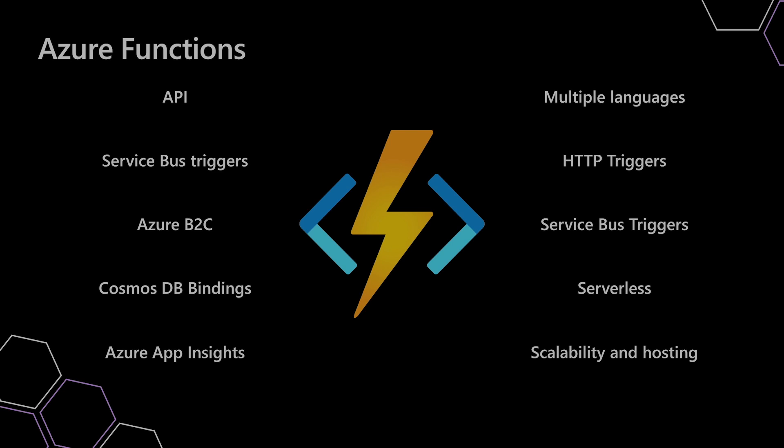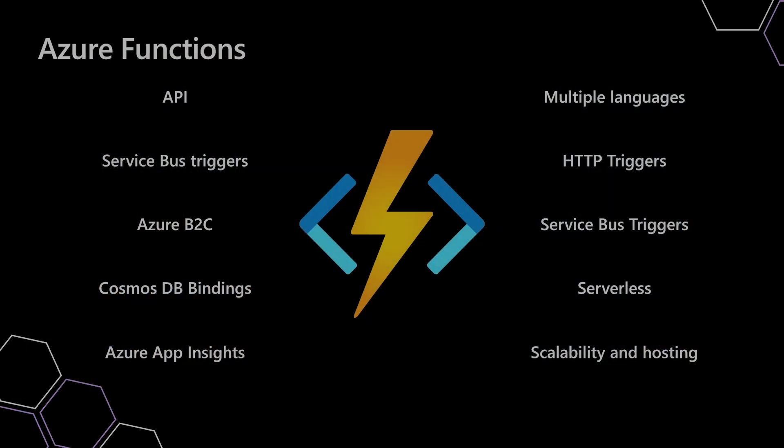But we can have all sorts of things trigger functions, whether it's service bus topics, messages, or whether we're binding to Cosmos DB, and the same with outputs as well. We have the whole authentication wrapper if we need different types of authentication. We can sit it behind Azure API Management for making things secure and splitting things apart and separating our concerns. And we can also write them in multiple languages — we're going to have a look at a C# example in a second, but we can write in JavaScript, TypeScript, and all sorts of different languages that are available.